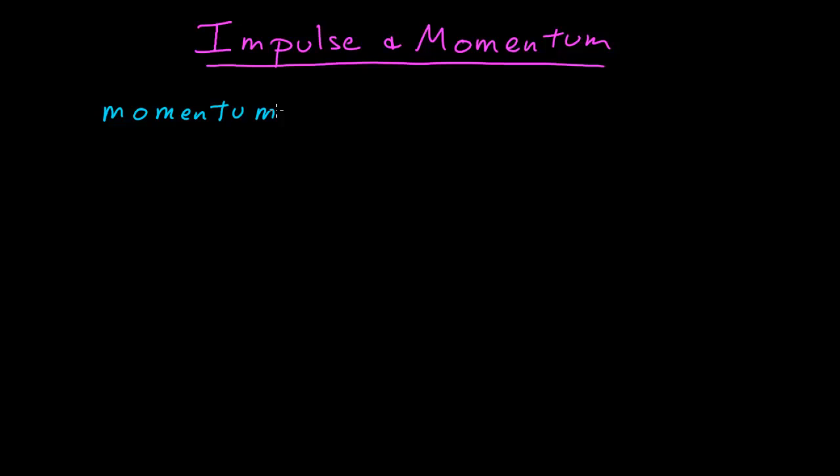In this video I want to introduce the idea of momentum and how impulses lead to changes in momentum. Momentum is easy enough to define as long as we're moving at relatively slow speeds — nothing near the speed of light. Momentum is simply the mass of the object times the velocity. So it's a vector quantity like the velocity; it's proportional to the velocity, just multiplied by the mass.